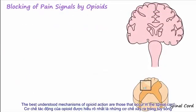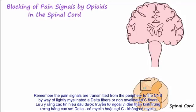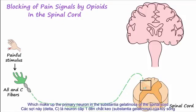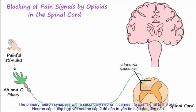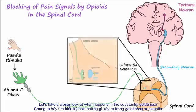The best understood mechanisms of opioid action are those that occur in the spinal cord. Pain signals are transmitted from the periphery to the CNS by way of lightly myelinated A-delta fibers or non-myelinated C fibers, which make up the primary neuron. In the substantia gelatinosa of the spinal cord, the primary neuron synapses with a secondary neuron that carries the pain signal to the brain.